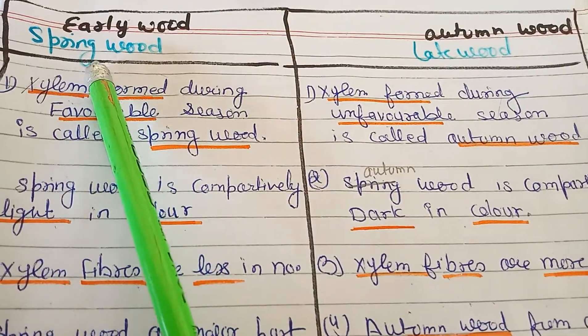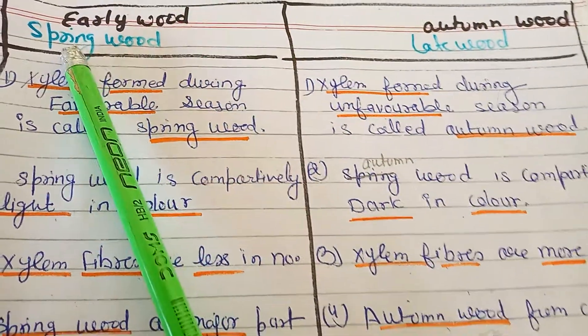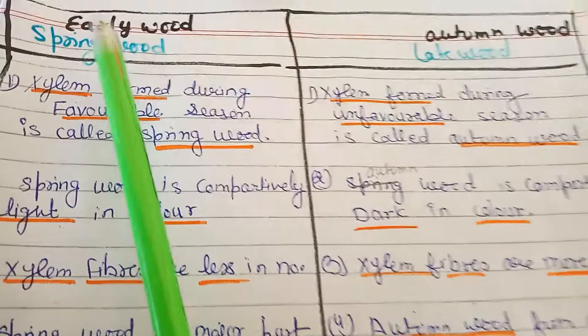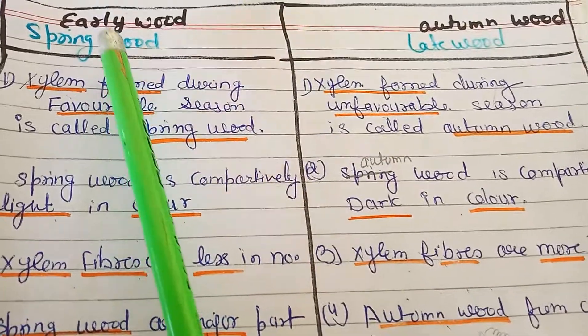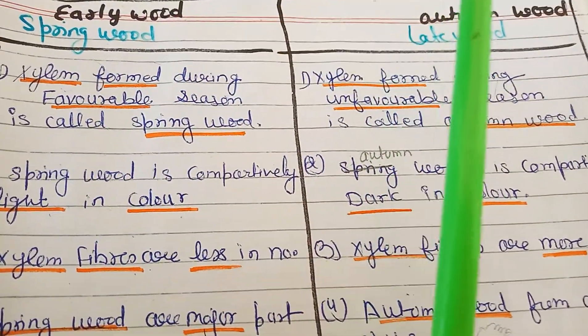I am talking about early wood and late wood, also called spring wood and autumn wood. Spring wood is formed in the spring season, while autumn wood is formed in the summer or autumn season.